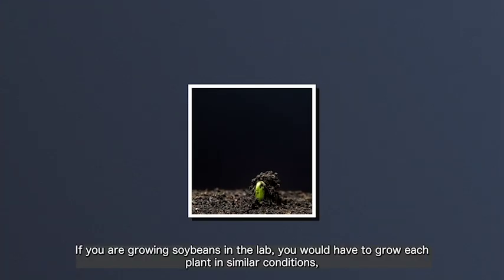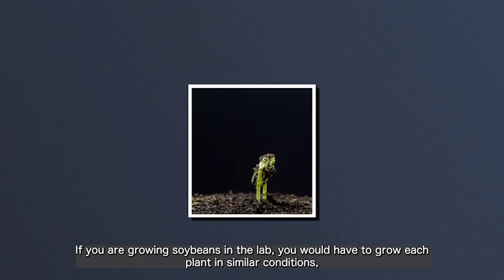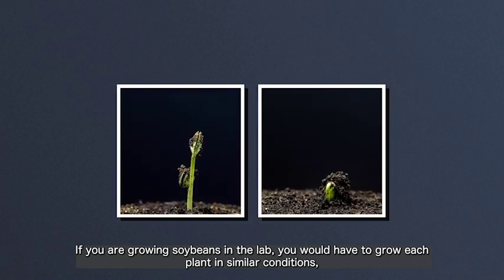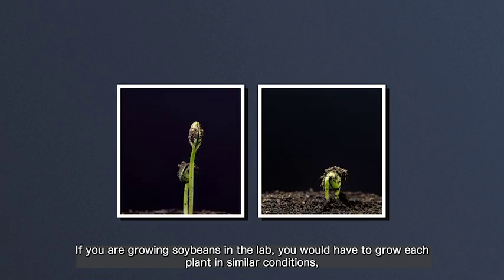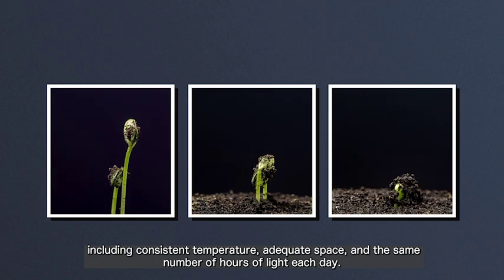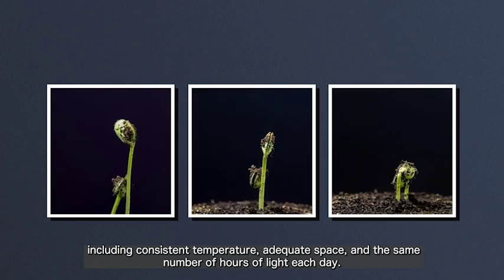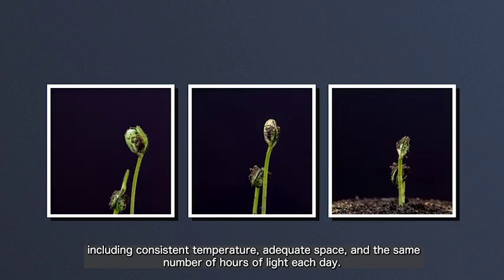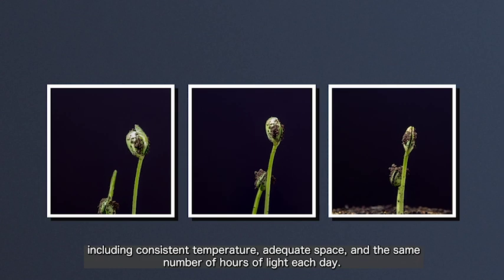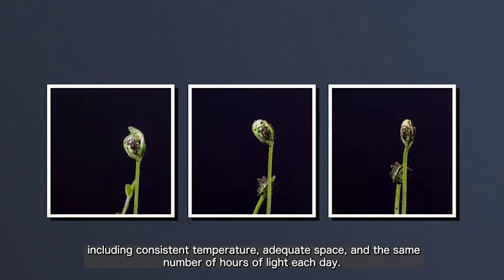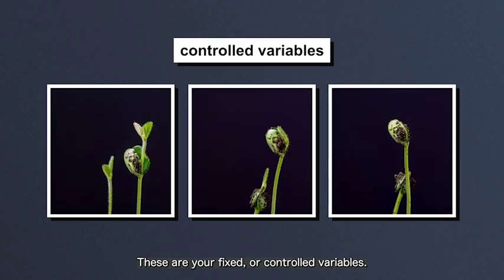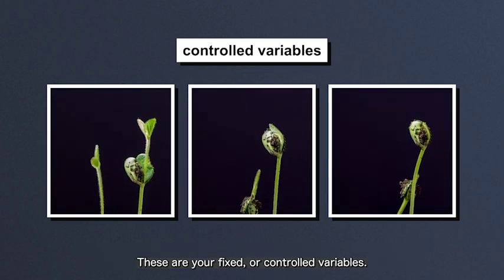If you are growing soybeans in the lab, you would have to grow each plant in similar conditions, including consistent temperature, adequate space, and the same number of hours of light each day. These are your fixed or controlled variables.